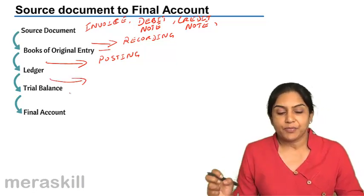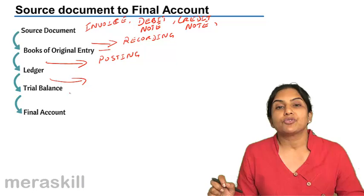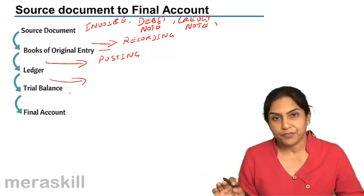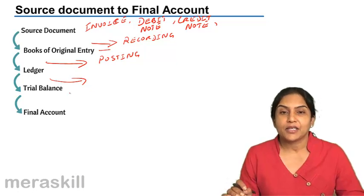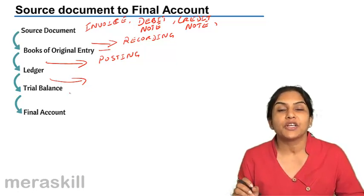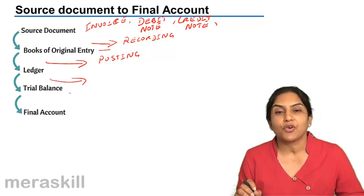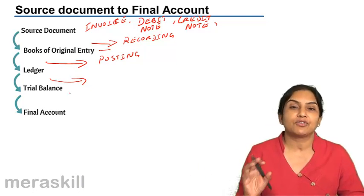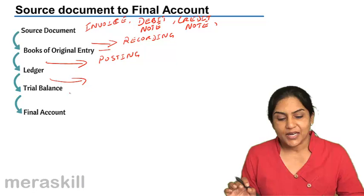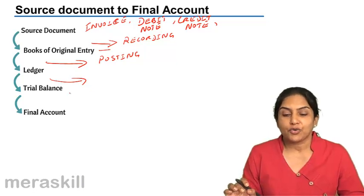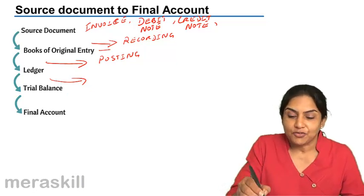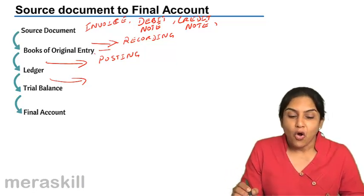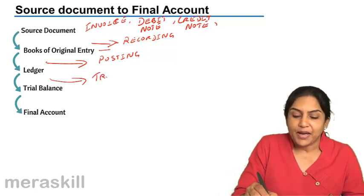When taking balances from the ledger account to the trial balance, we may forget to take the cash balance, or when we take the total of discount allowed we may have placed it on the credit side of the trial balance instead of the debit side. So there could be mistakes at the stage of recording, at the stage of posting, or while transferring balances.